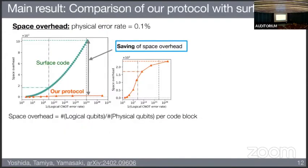We show a performance comparison of our protocol with the surface code. We compare the space overhead at a physical error rate of 0.1%, a natural setting. This graph shows the space overhead for the surface code in green and our protocol in orange. It shows a saving of space overhead with our protocol. The space overhead is evaluated as the number of physical qubits per logical qubit for each code block.